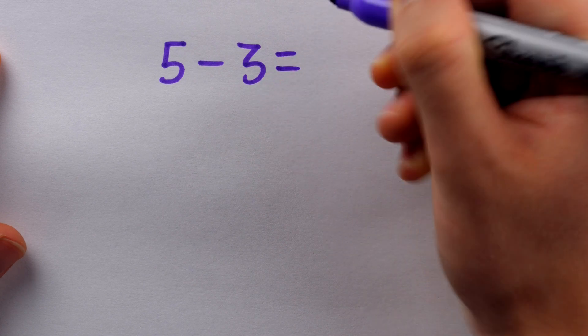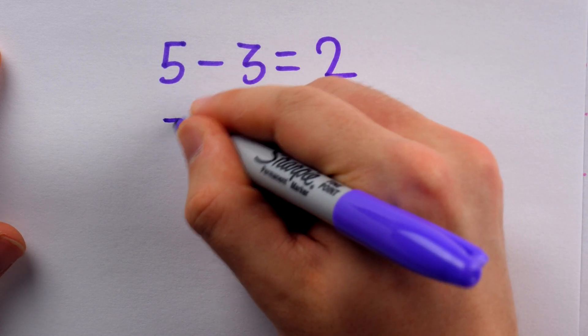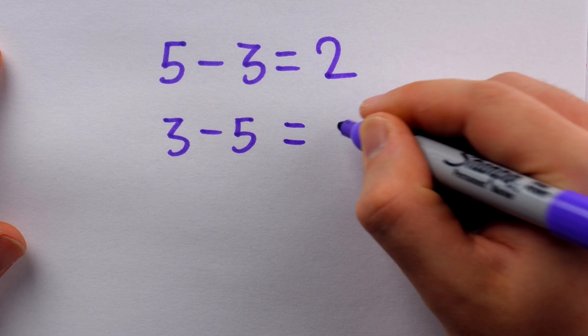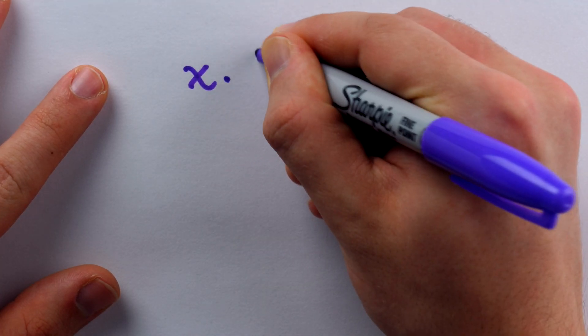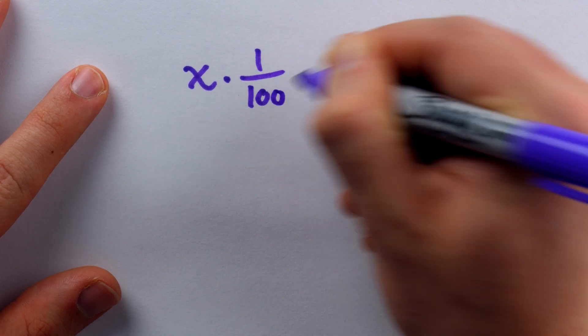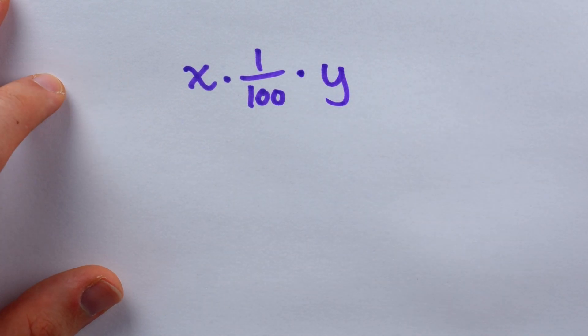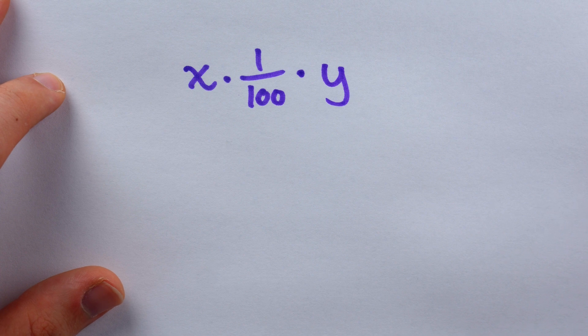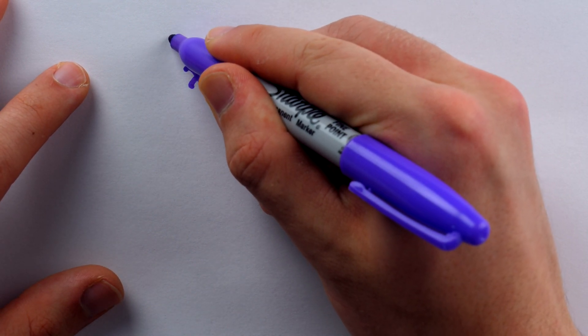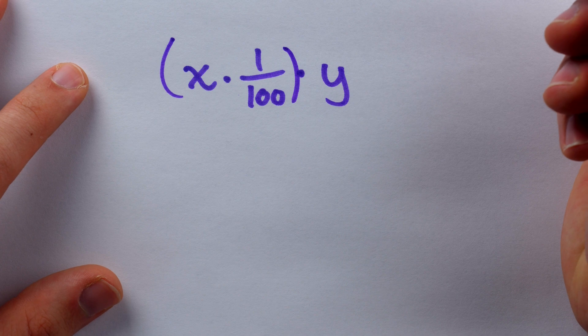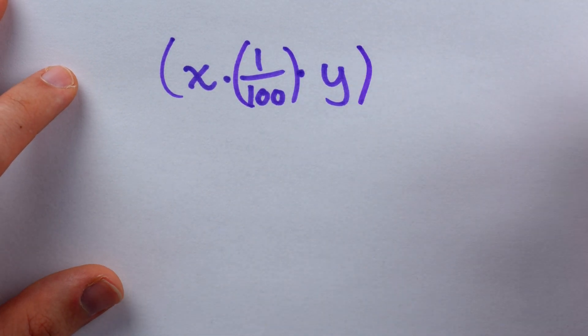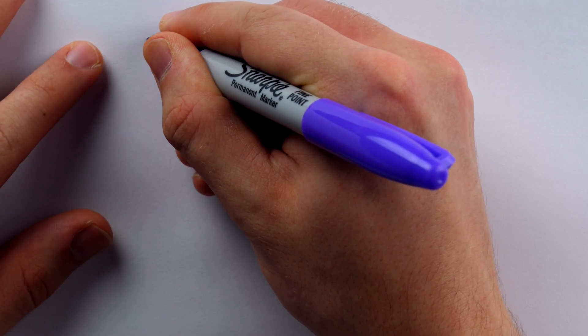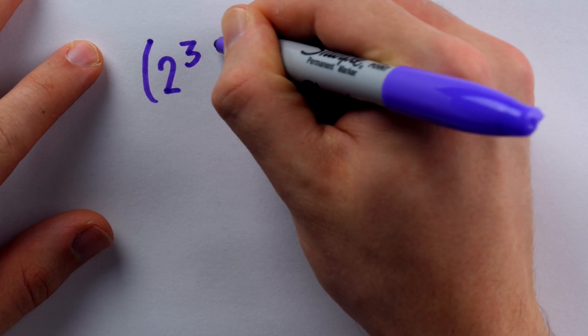And the commutative property is not to be taken for granted. Not every operation obeys this property. We know that subtraction, for example, is not commutative. Order definitely matters for subtraction. Even the associative property, which I only briefly mentioned earlier, cannot be taken for granted. It doesn't always work. It does for multiplication. It's the property that tells us we can group the x with the 1 over 100 in this product, or we could group the 1 over 100 with the y. Either way, we would get the same result. But even with an operation as simple as, say, exponentiation, the associative property no longer applies.